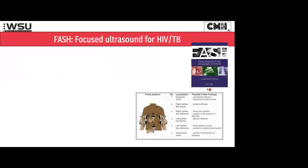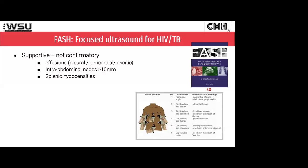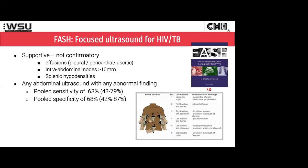In terms of diagnostics, what is becoming much more used in clinical practice is FASH - focused ultrasound for HIV and TB. You're all aware of eFAST, which we use in the trauma setting to look for internal bleeds. FASH uses exactly the same views but is applied to HIV and TB. FASH is not going to help you make a definitive diagnosis - it's supportive, with a sensitivity of about 63% and specificity of 68%. As you become more confident with ultrasound skills - using eFAST in your A&Es - you can start becoming confident in what you're looking for specifically for TB.